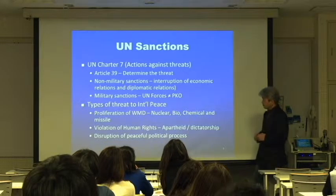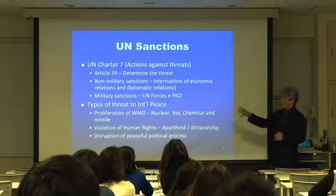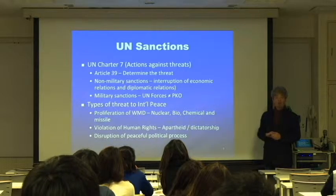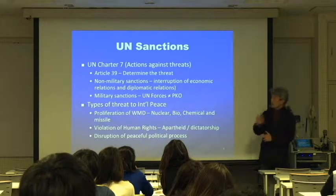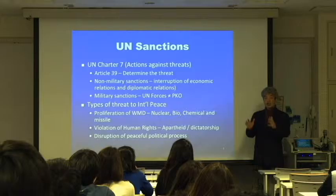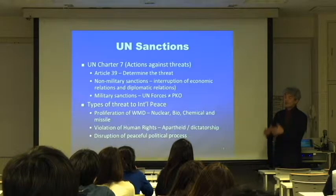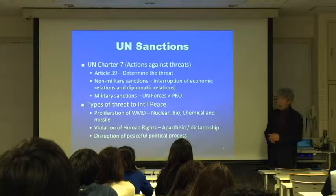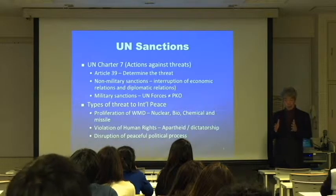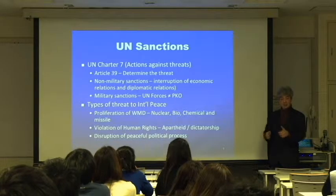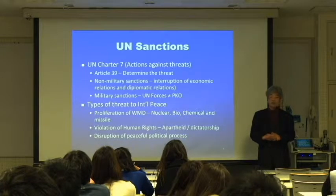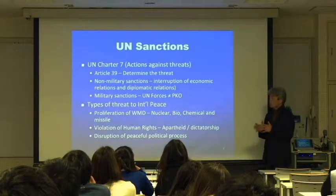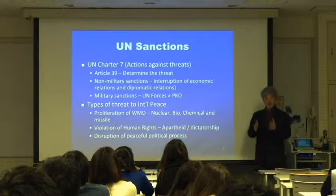First, what is sanctions? UN sanctions is based on the legal document called the UN Charter. The UN Charter defines what the UN can and cannot do. UN Charter Chapter 7 is the famous one which authorizes the UN to take actions against threats to international peace and security. If there is a recognized threat — such as the DPRK or Iran's nuclear program — then Article 39 allows the UN Security Council, UNSC, to determine those threats. If the Security Council says you are a threat, then the UN can take action.